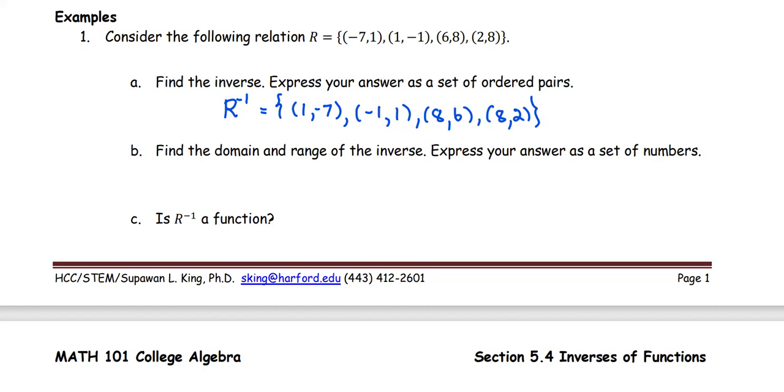In part B, we're going to find domain and range of the inverse. Express your answer as a set of numbers. The domain of the inverse of this relation is the set of the first coordinates, which is 1, -1, 8. We have 8 repeated, so we don't have to write it twice. For the range of the inverse, we have the set of the second coordinates: -7, 1, 6, and 2.